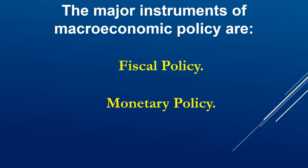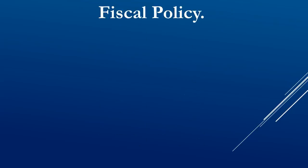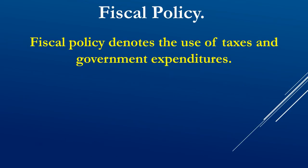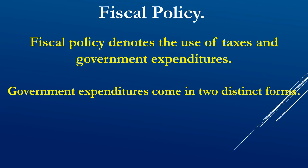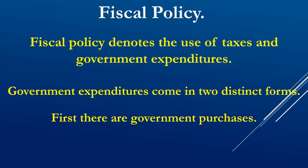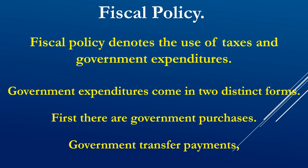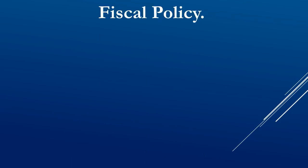Fiscal policy denotes the use of taxes and government expenditures. Government expenditures come in two distinct forms: first, government purchases — for example, the government's responsibility to provide infrastructure and defense, such as purchasing tanks. Second, government transfer payments, such as pensions for the elderly.